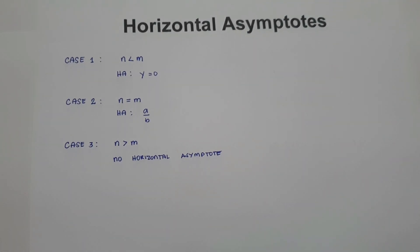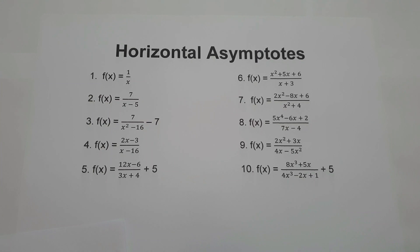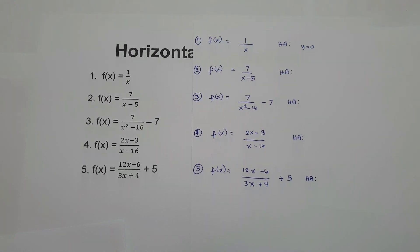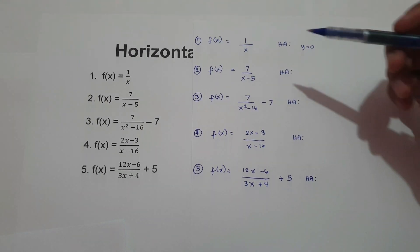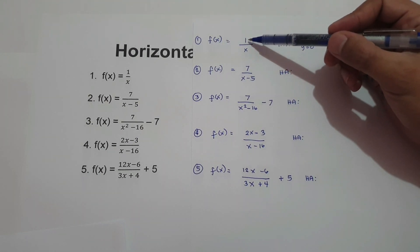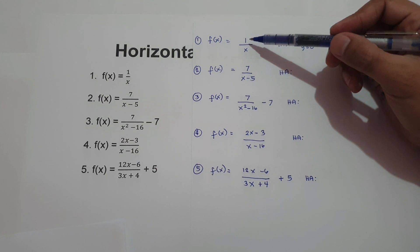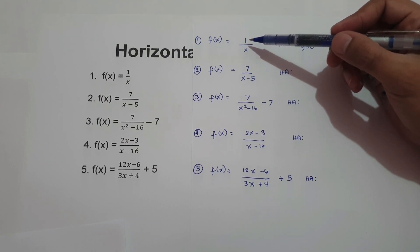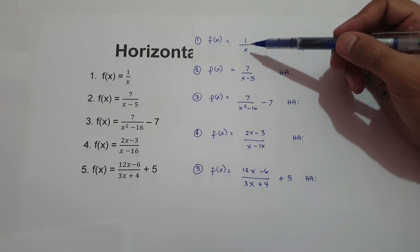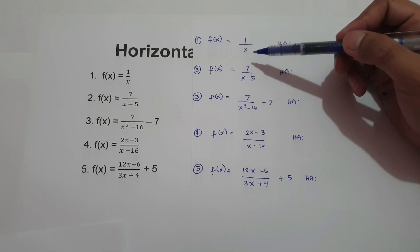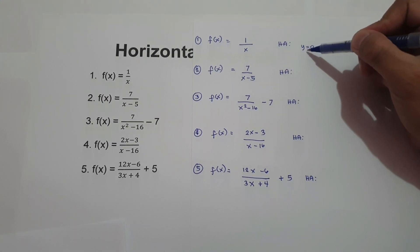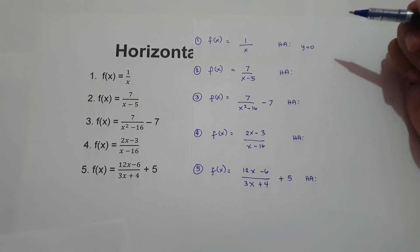Let's take the first example. Number one: f of x equals 1 over x. In our given, we do not have a variable on the numerator. Therefore, we can say that the degree of the numerator is less than the degree of the denominator, so our horizontal asymptote is zero.